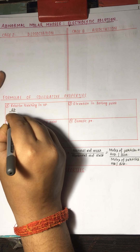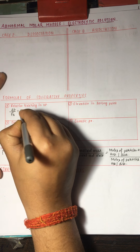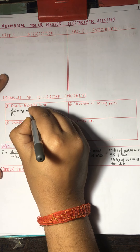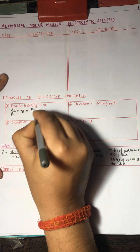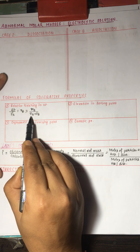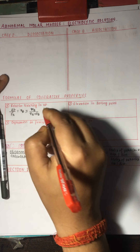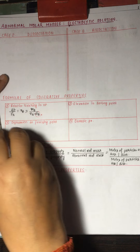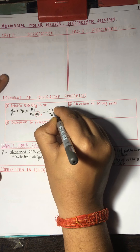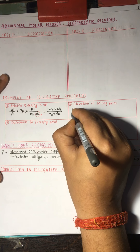The first colligative property is relative lowering in vapor pressure: ΔP/P₀A = XB, where XB is the mole fraction of solute, equal to NB divided by (NA + NB). If the solution is very dilute, we neglect NB from the denominator, so ΔP/P₀A = NB/NA. NB can be written as WB/MB and NA as WA/MA. This is the working formula for dilute solutions.